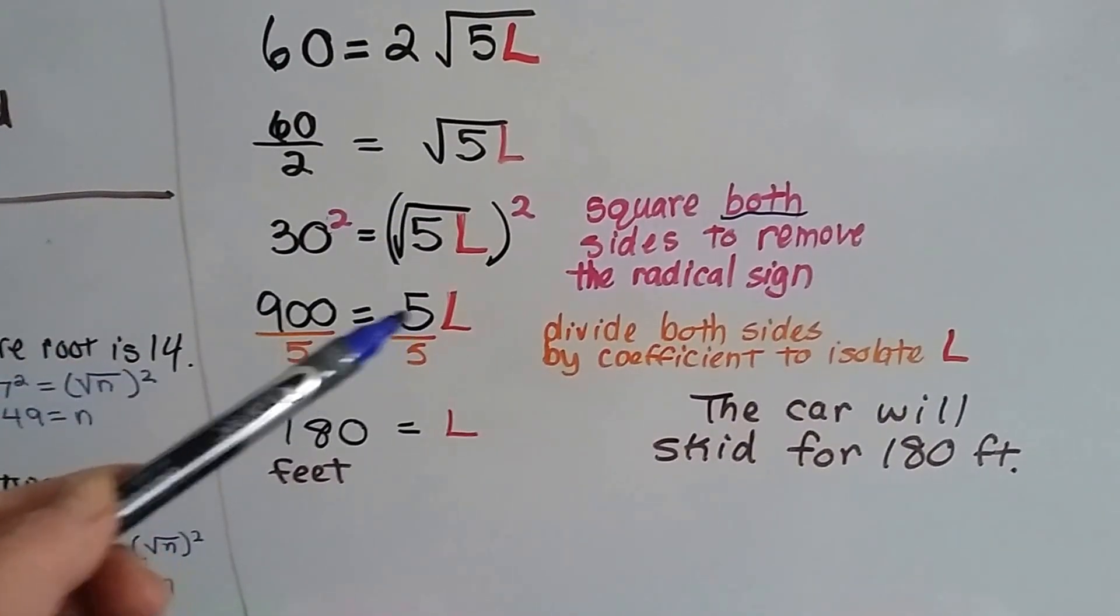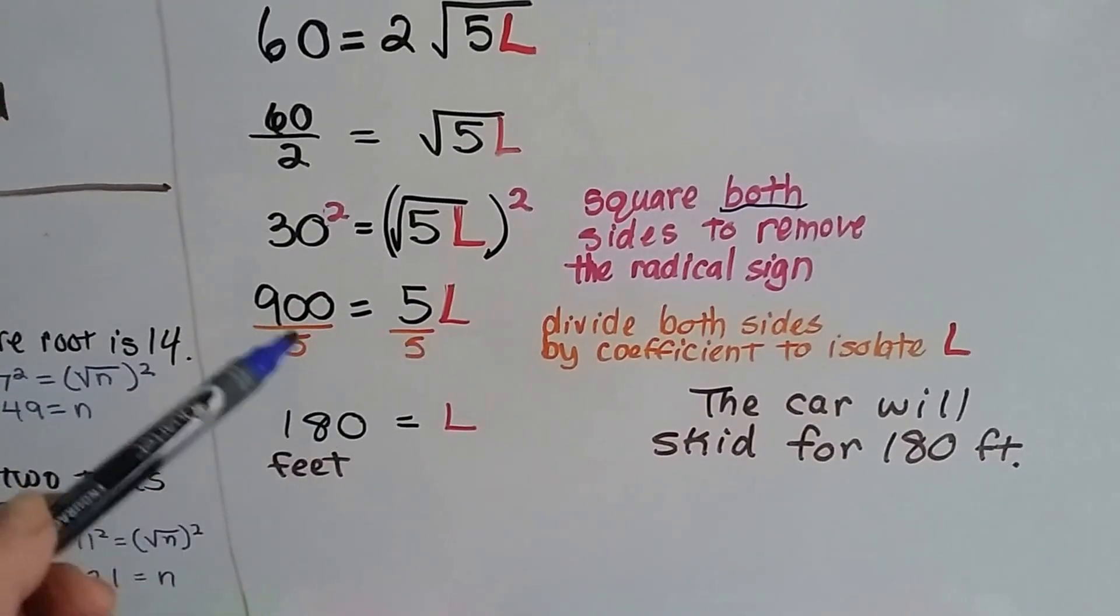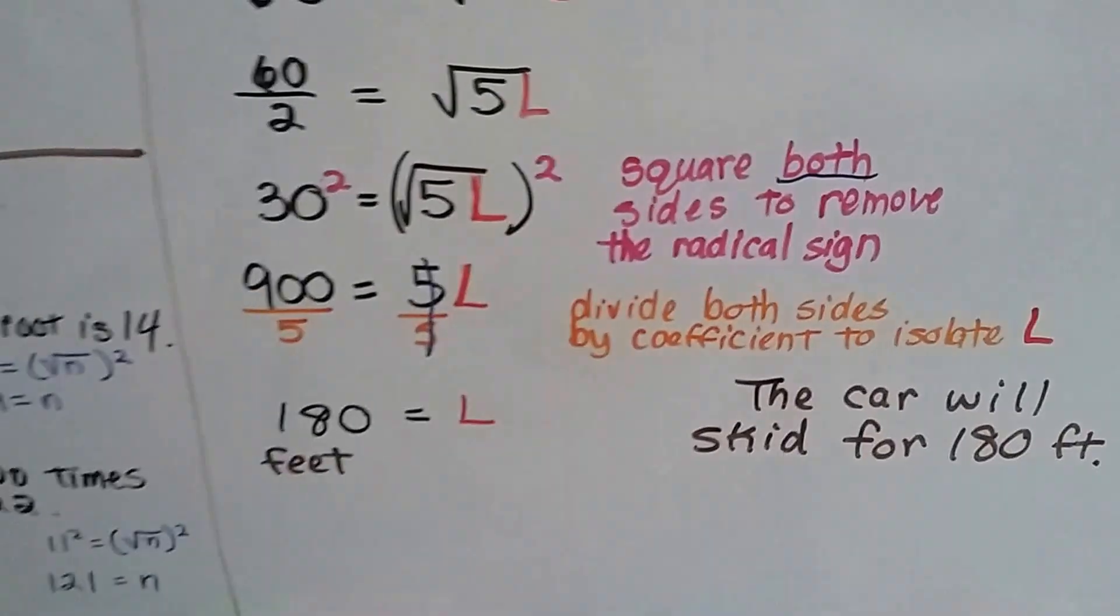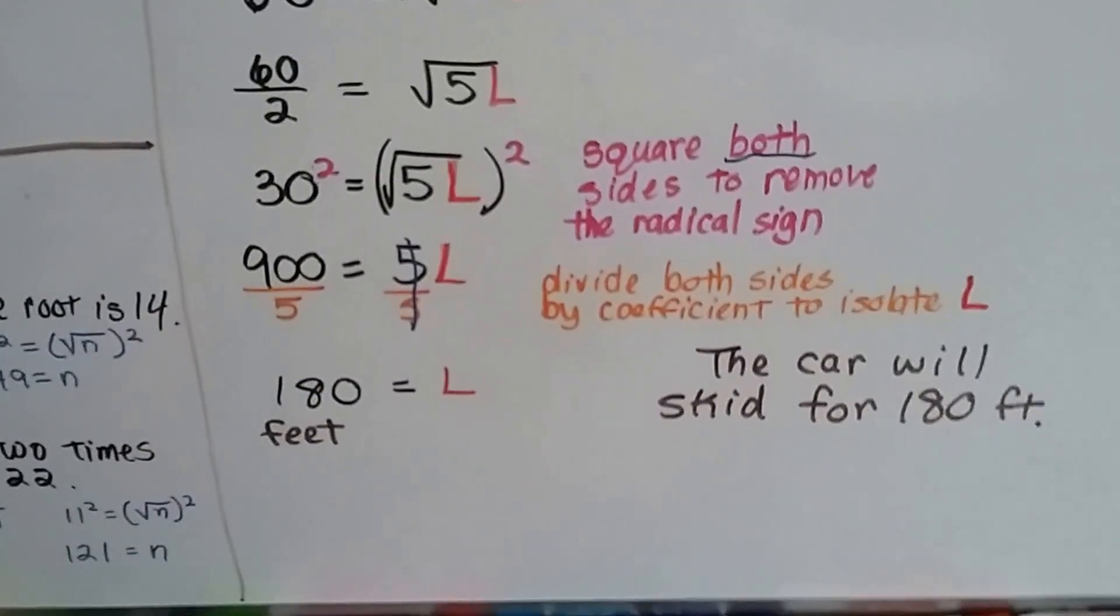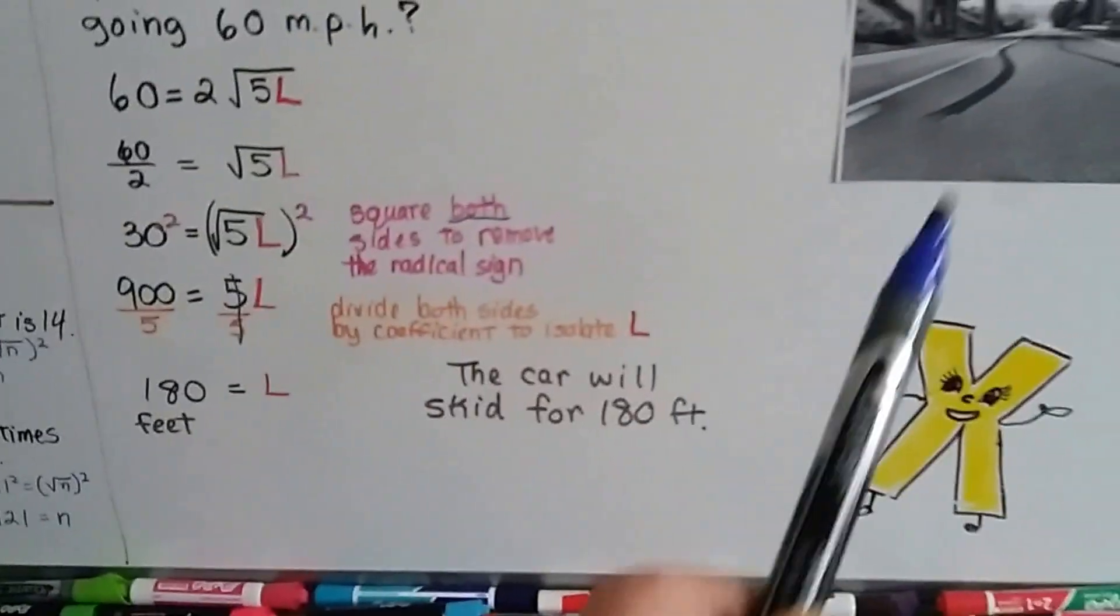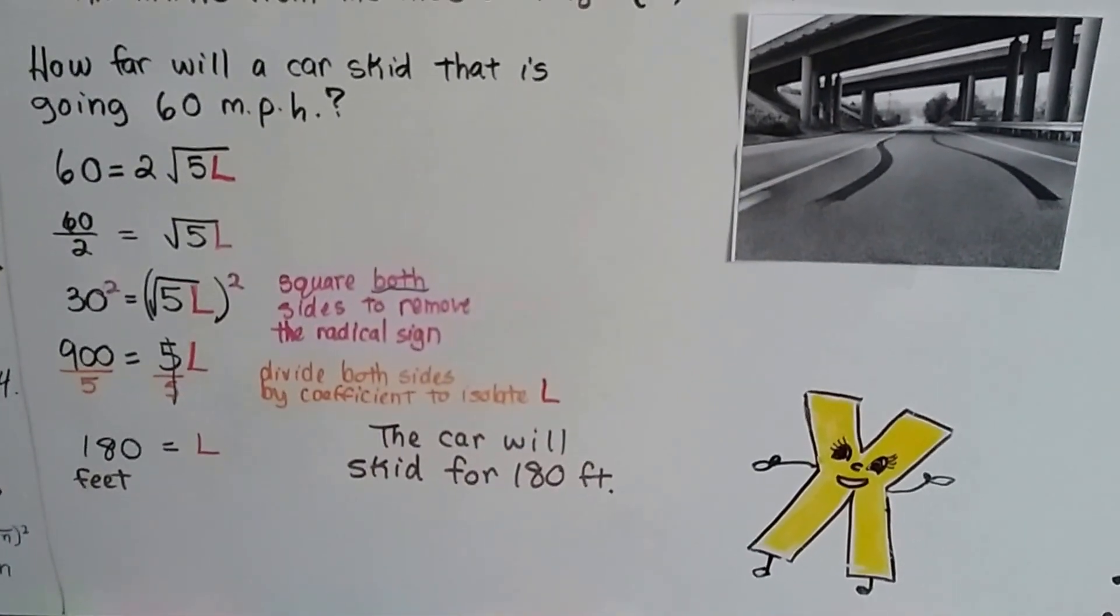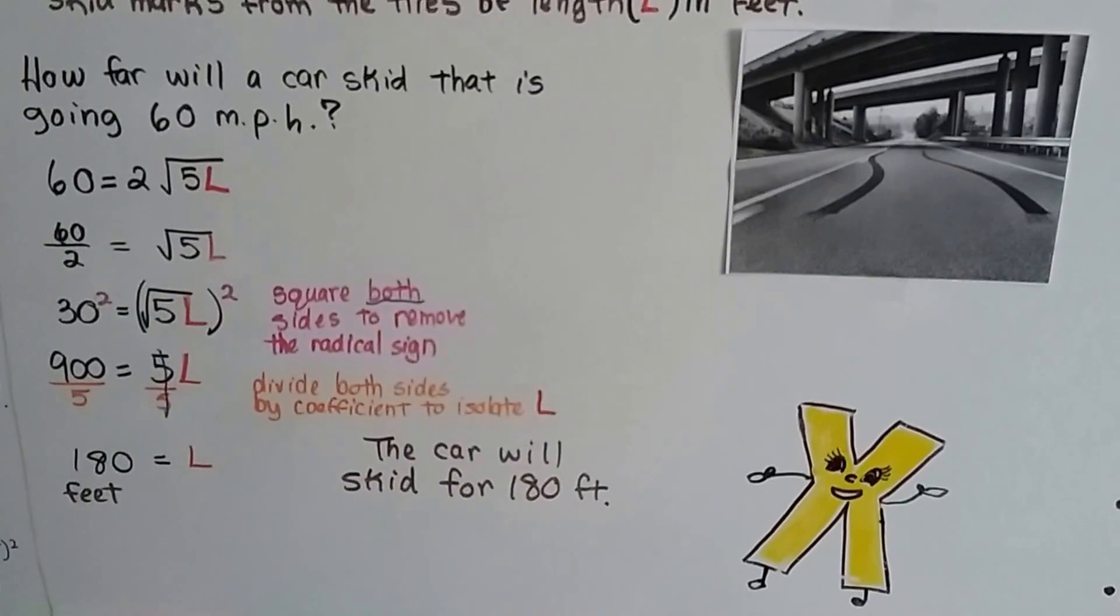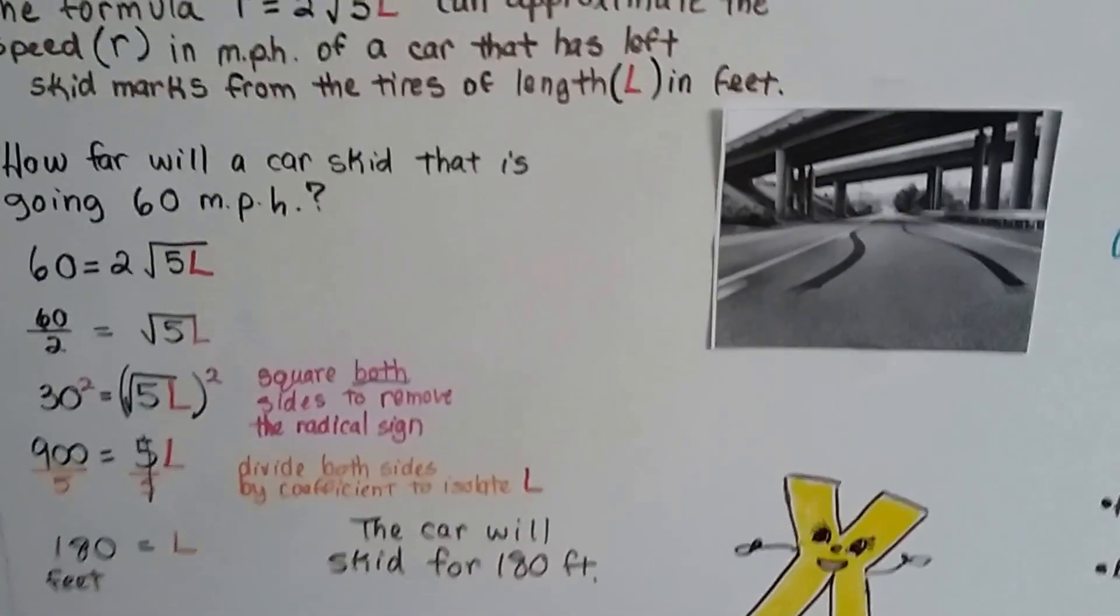30 times 30 is 900. Now we don't have a radical sign. We've got 900 equals 5L. We can just divide both sides by that coefficient 5. Turn that into identity property, invisible 1. 900 divided by 5 is 180. We know it's 180 feet. That car is going to skid 180 feet before it actually stops. That's why they tell you don't follow someone too closely because if they slam their brakes on, you're not going to have time to skid and stop.